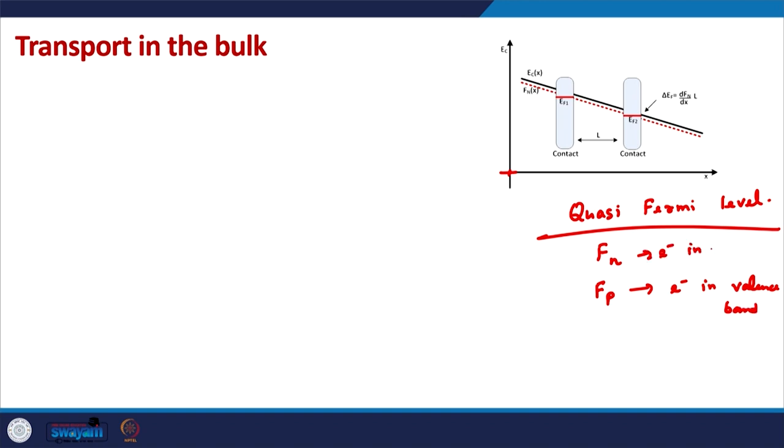In steady state there is a gradient in these quasi Fermi levels. These are not actual Fermi levels since Fermi level is an equilibrium concept. Quasi Fermi levels are defined when the system is displaced from equilibrium, which is why we need two: one for electrons in the conduction band and one for electrons in the valence band, since these two kinds of electrons may now behave differently.